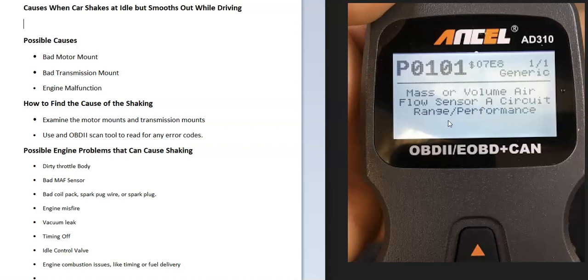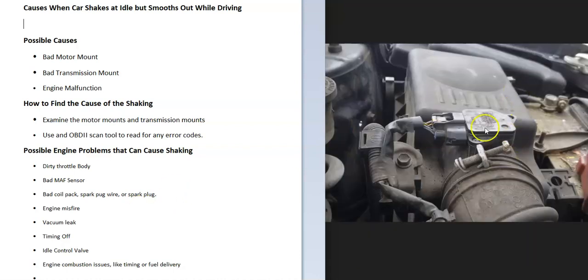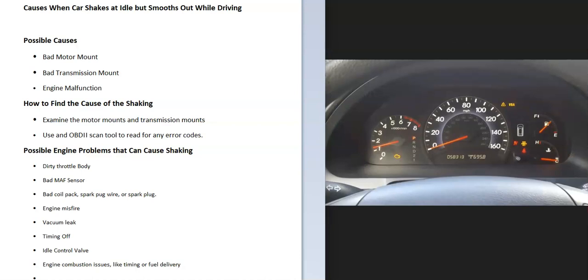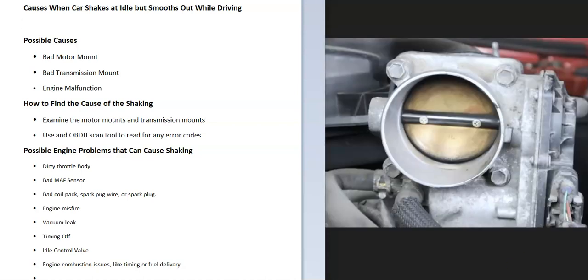For example, a P0101 code indicates a mass airflow sensor issue. If you get that code, you'd know there's something going on with the MAF sensor near the air intake box. Usually when these have an issue, they're dirty and need cleaning. Sometimes the car can still shake with no engine codes, so there are other things to check.